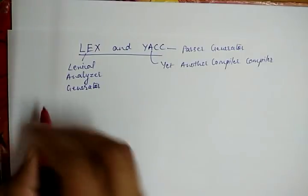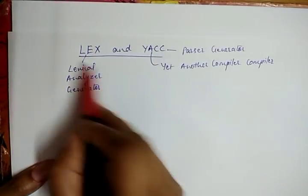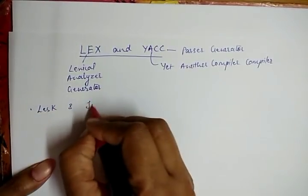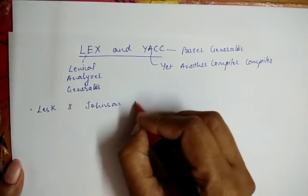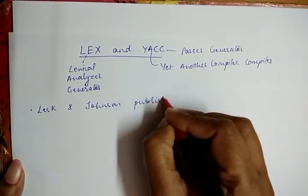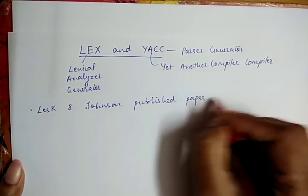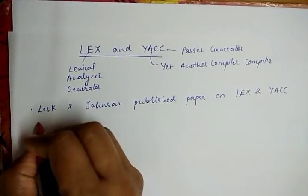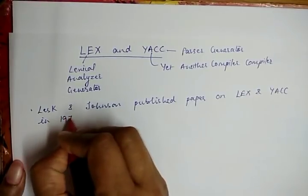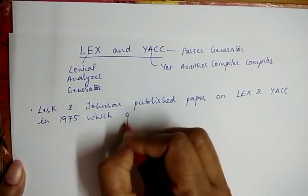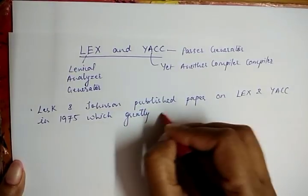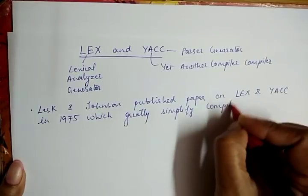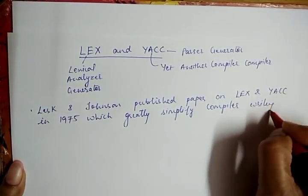If we look at the history of these two tools, Lesk and Johnson published a paper on Lex and Yacc in 1975, which greatly simplified compiler writing.